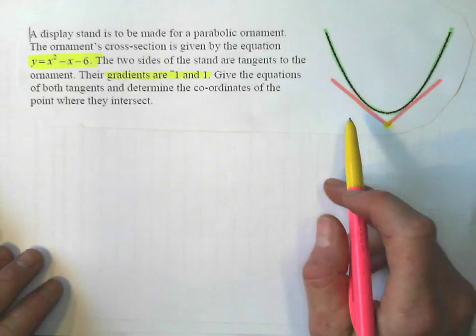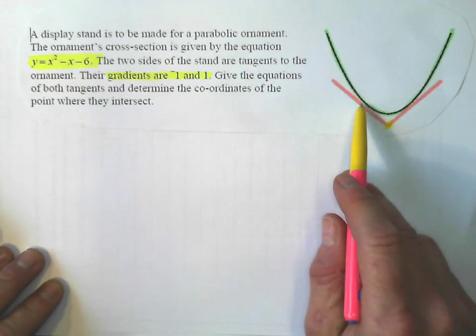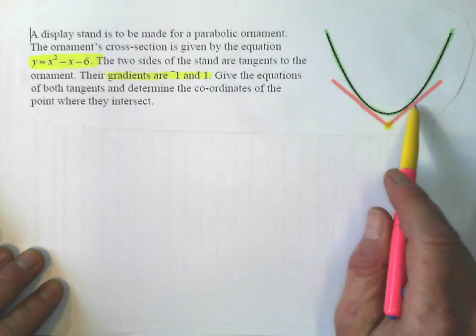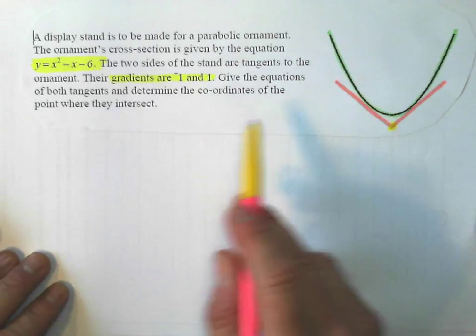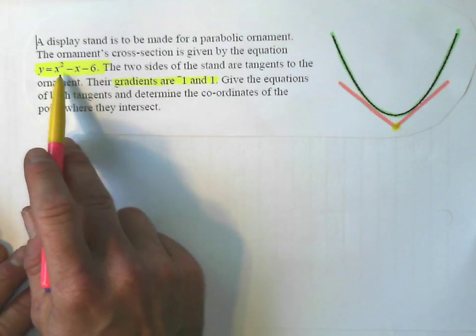Okay, so to start this problem off, I want to try to find what the coordinates are of those points right there. And to do that, the first thing I'm going to do is differentiate my original function right here.